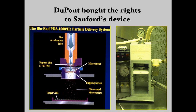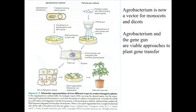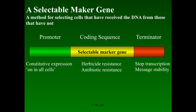DuPont bought the rights to John Sanford's device and paid over $9 million for the rights to that patent. They made a helium-driven device that was a lot more predictable and allowed for testable and reproducible parameters. This technique, first used on corn, was then applied to wheat, barley, rice, and other monocot plants. Then Japan Tobacco, working on Agrobacterium, made Agrobacterium accessible to monocots. Now both techniques are widely applied around the world. We have methods to clone DNA, put it into cells we can reculture, get that DNA in, and use selectable markers — the whole process is complete.